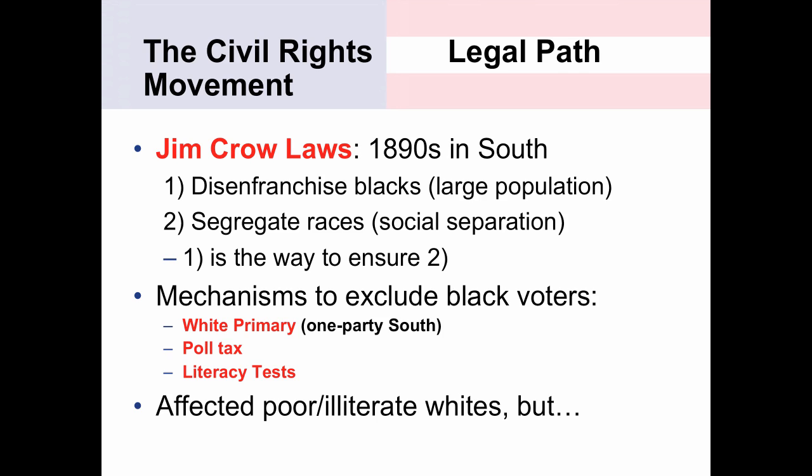The poll tax and literacy test did affect poor and illiterate whites, but the Jim Crow laws also had another mechanism called the grandfather clause. If your grandfather could vote, you could vote and were exempt from the poll tax and literacy test. Remember, this was the 1890s — only two or three decades after the Civil War. Racial minorities' grandparents were not allowed to vote, so the only people whose grandfathers had been allowed to vote were whites. The obvious effect was to exempt white people from the poll tax and literacy tests. Taken together, the Jim Crow laws represented a powerful obstacle that kept African Americans from voting, with the ultimate goal of maintaining segregation.